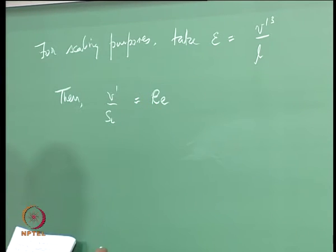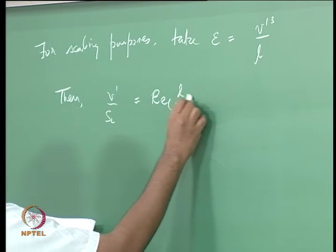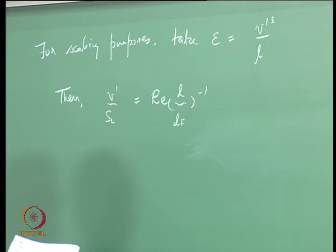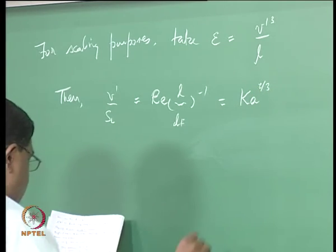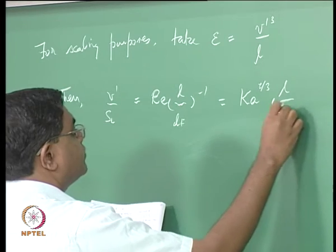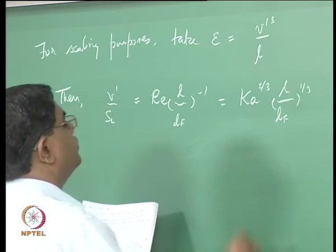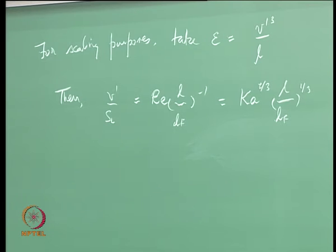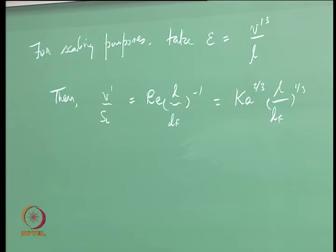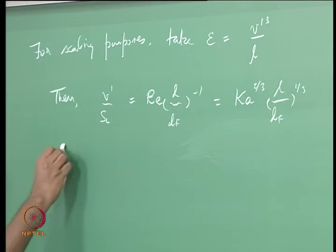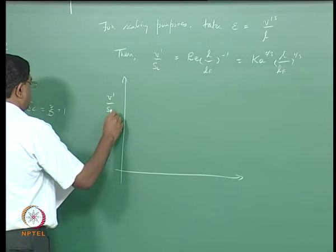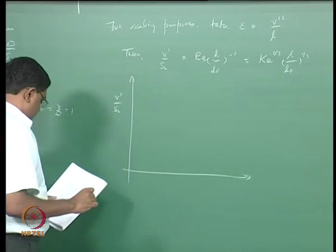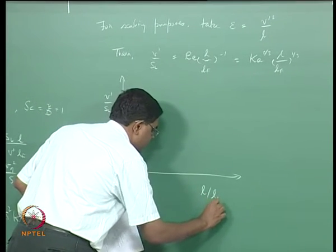This is equal to Re times (L over LF) to the minus 1, and that is also equal to Karlovitz to the two-thirds times (LF over L) times (L over LF) to the one-third. This is what the regime diagram is all about - it plots V-prime over SL on the vertical axis against L over LF on the horizontal axis.